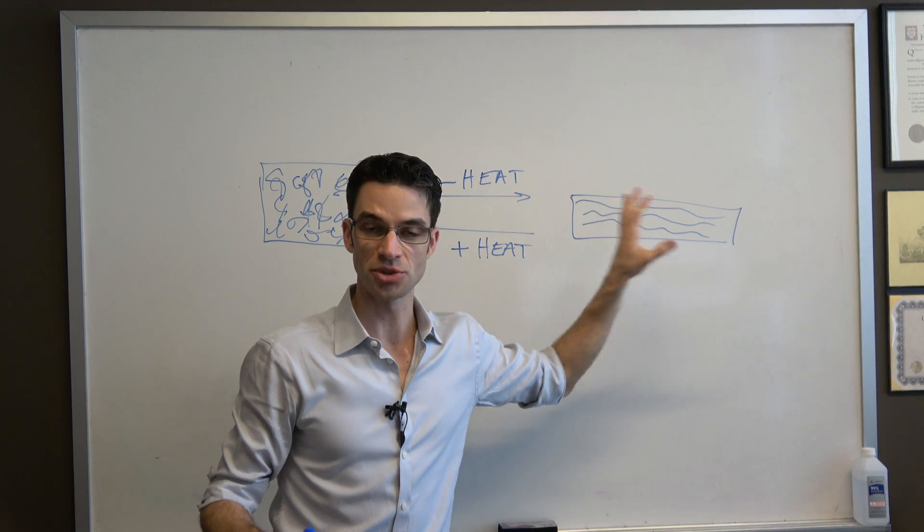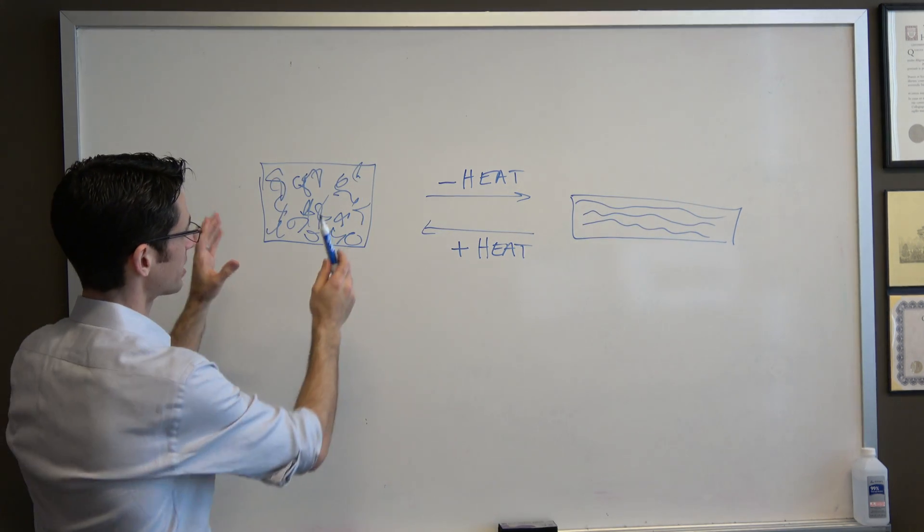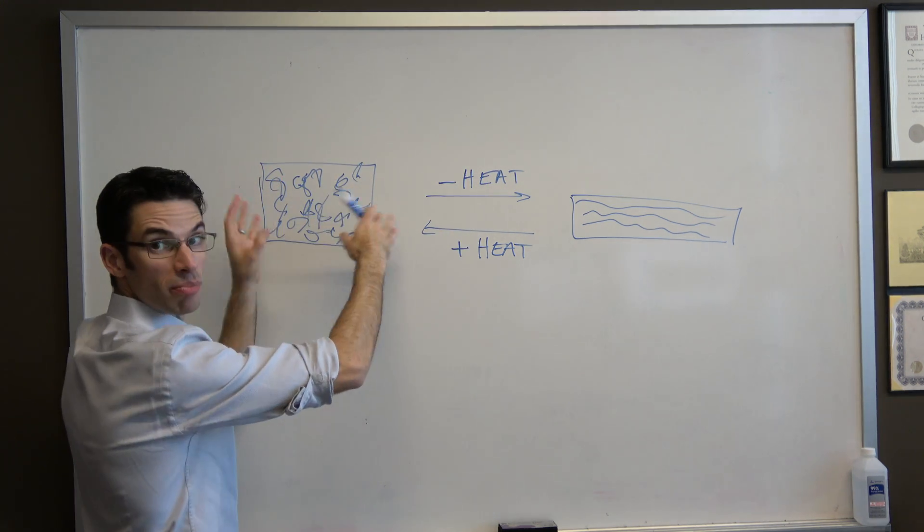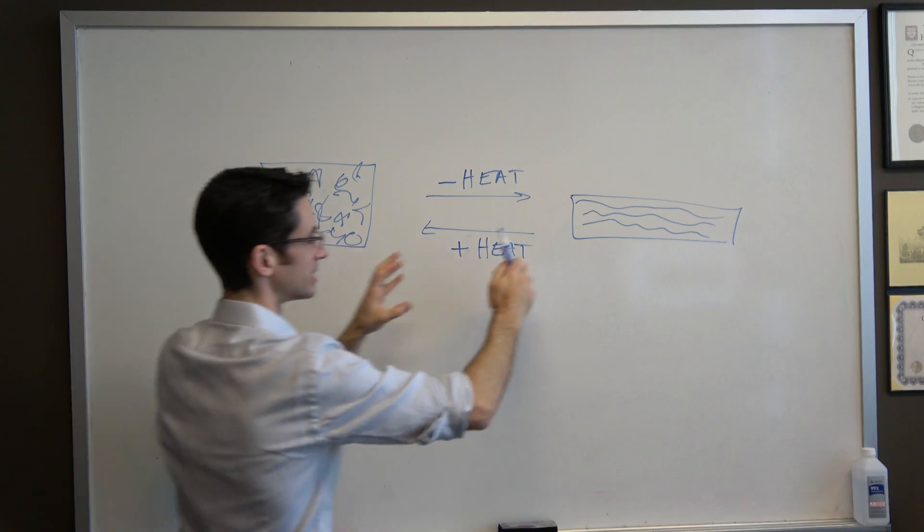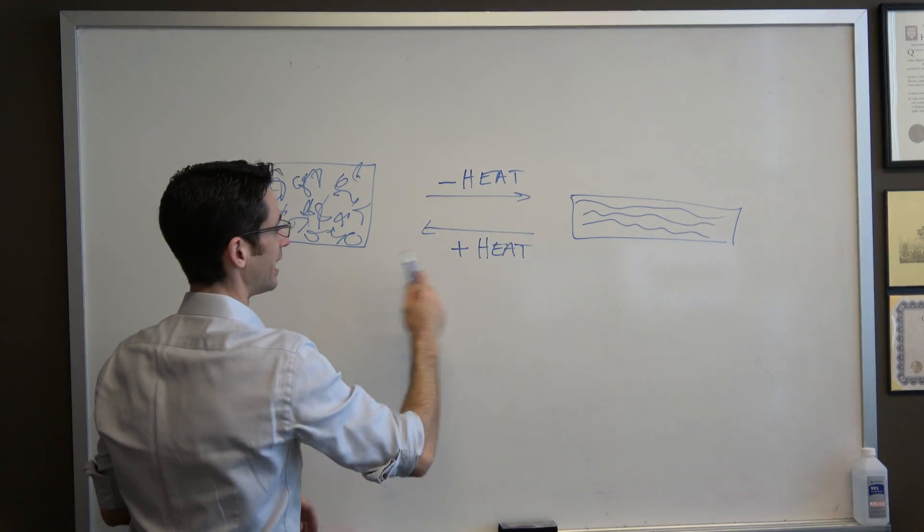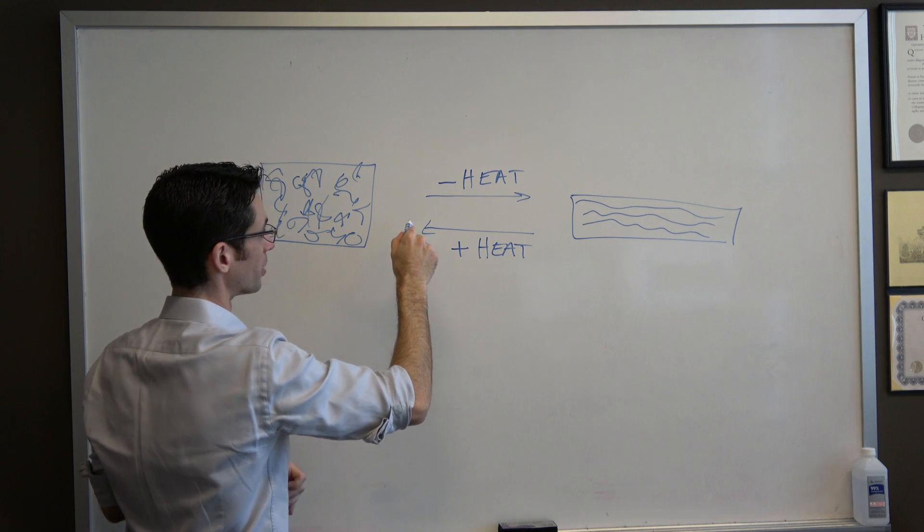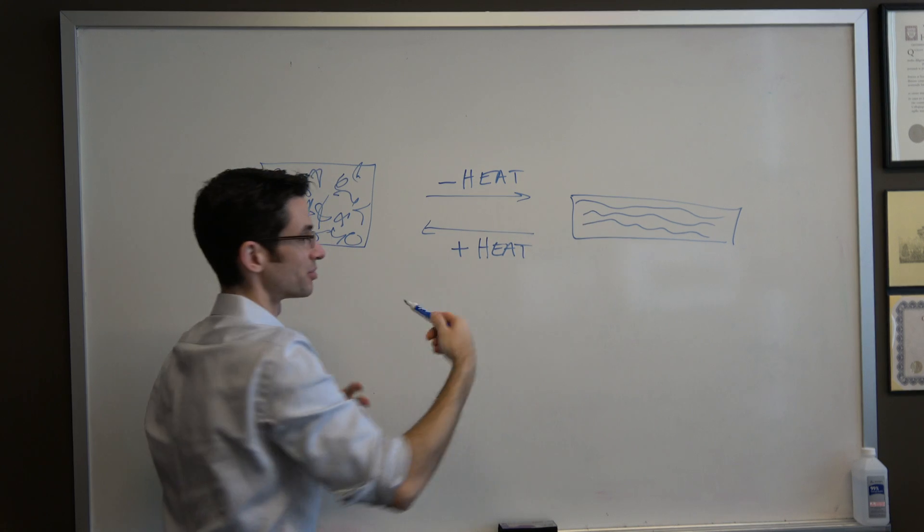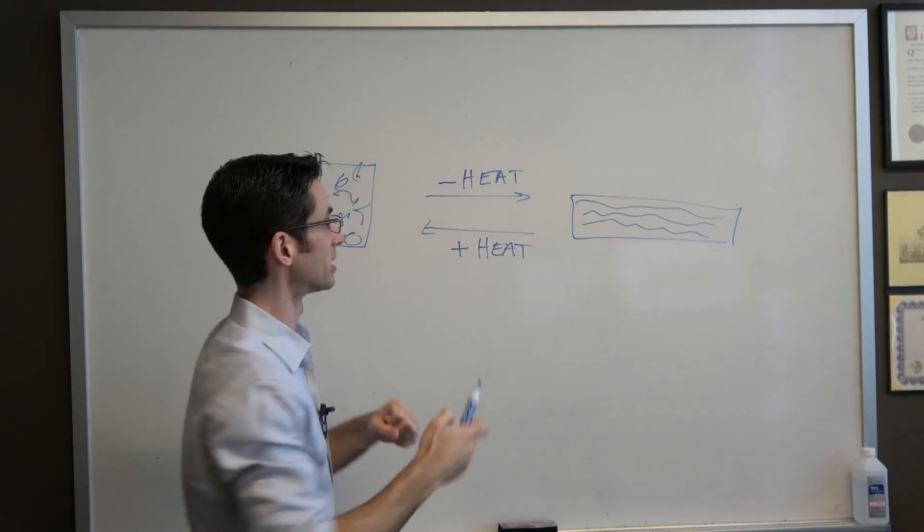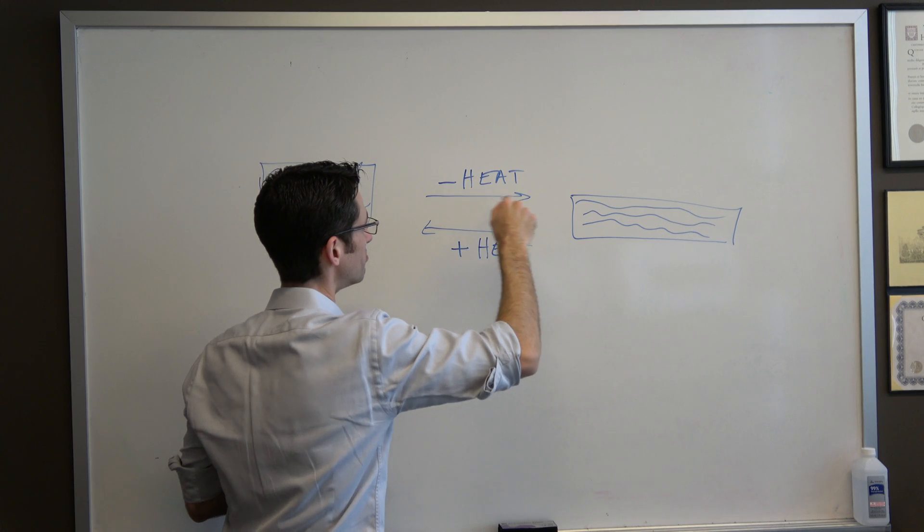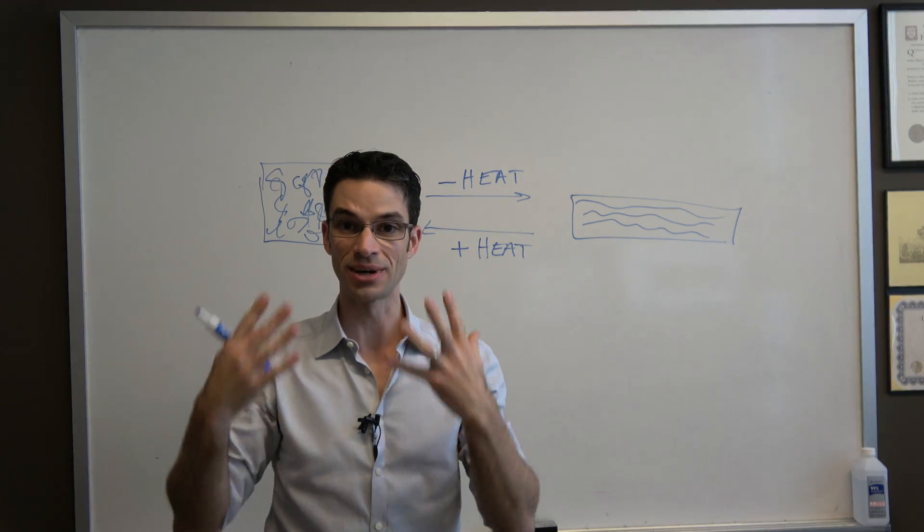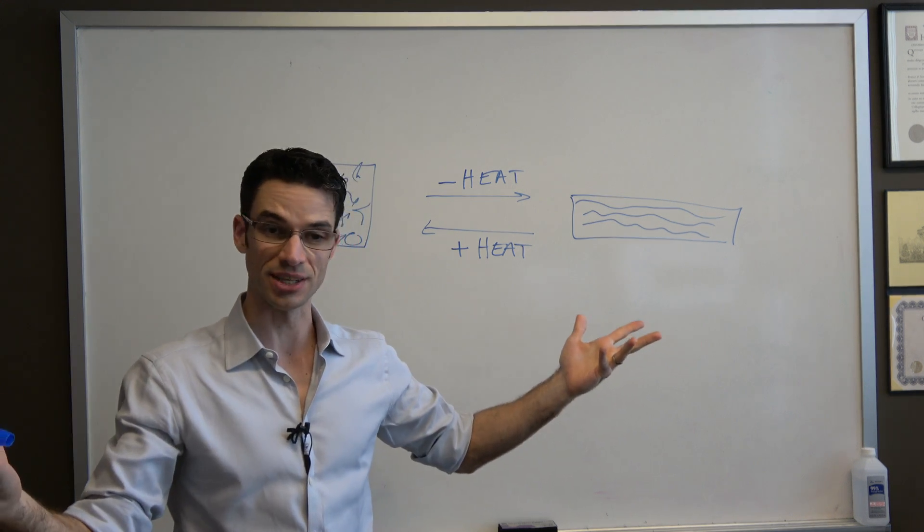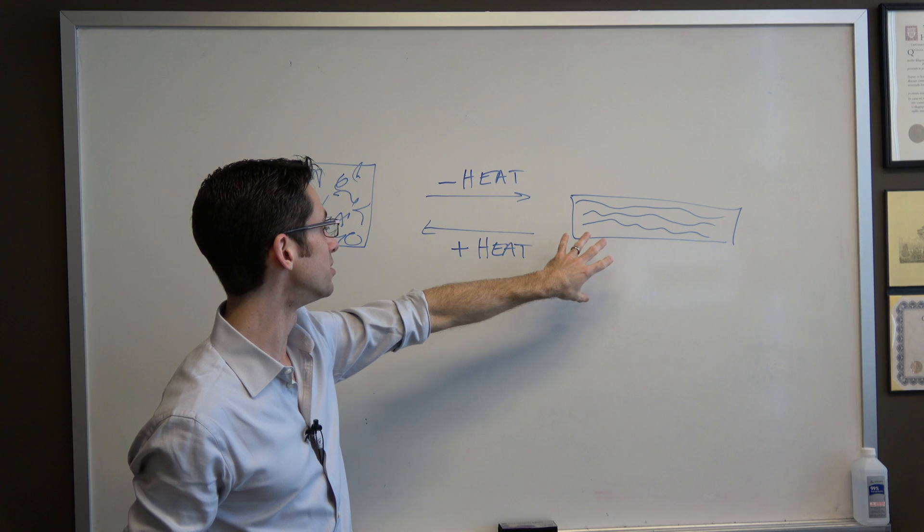If we take these balled-up polymer chains and go to the extended polymer chains, we see that negative heat, so heat comes out. Heat comes out, that's the heat that we're feeling. We go this direction, we have minus heat. The heat goes out and it goes into our skin.